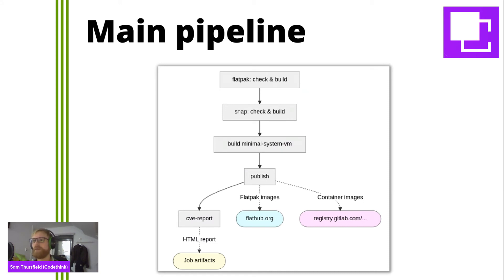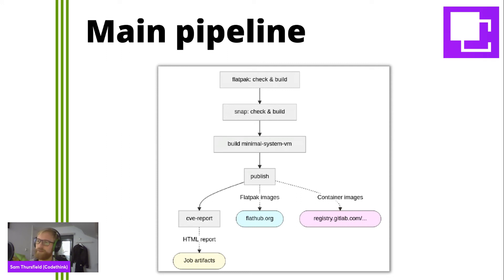When things are merged to the master branch, another CI pipeline runs and does some more checks. It builds a virtual machine and tests that it still boots. Then it publishes some artifacts. The latest master branch artifacts are published to Flathub — hopefully not many people are using them because they could be broken — and they're published to the container registry. A CVE report is also generated. All of this is done using BuildStream, so the elements I showed you make it very easy to produce the Flatpak images and container images in a single pipeline and push them every time the pipeline runs. It's continuous delivery.